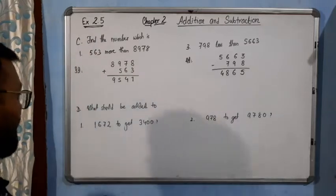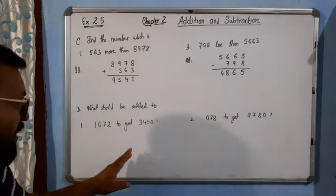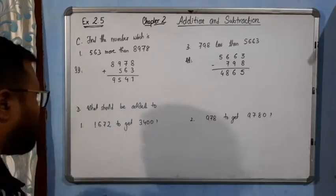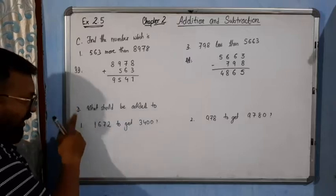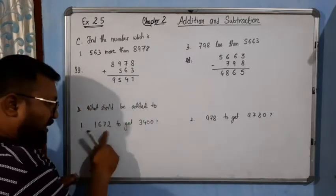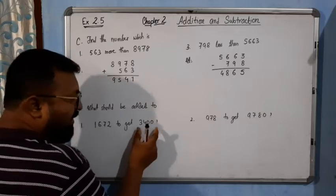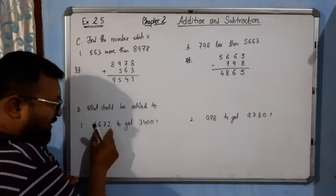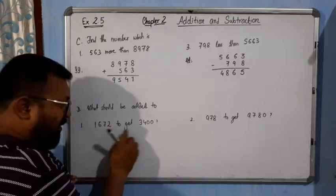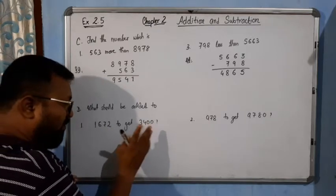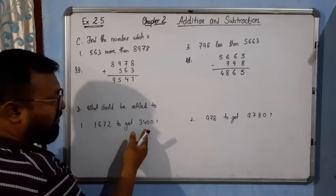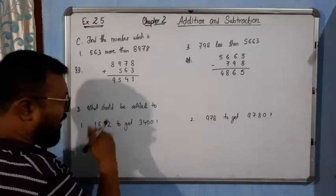Now come to question D. Here also 4 questions were there. I will only solve questions 1 and 2. Questions 3 and 4 you will do by yourself. What should be added to 1672 to get 3400? We have to add something so it becomes 3400. To find that number, we will subtract 1672 from 3400 to get the required value.